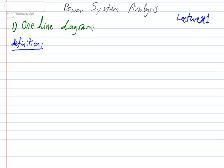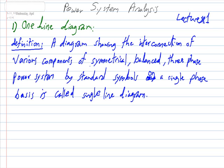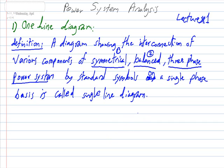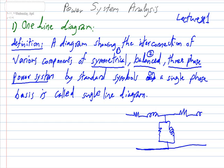This is important: it should be symmetrical, it should be balanced, and it should be a 3-phase power system. We use standard symbols on a single-phase basis because each component of the power system has its own equivalent circuit. For example, a 3-phase balanced induction motor has an equivalent circuit, and since it is a balanced system, it is designed on a single-line basis.